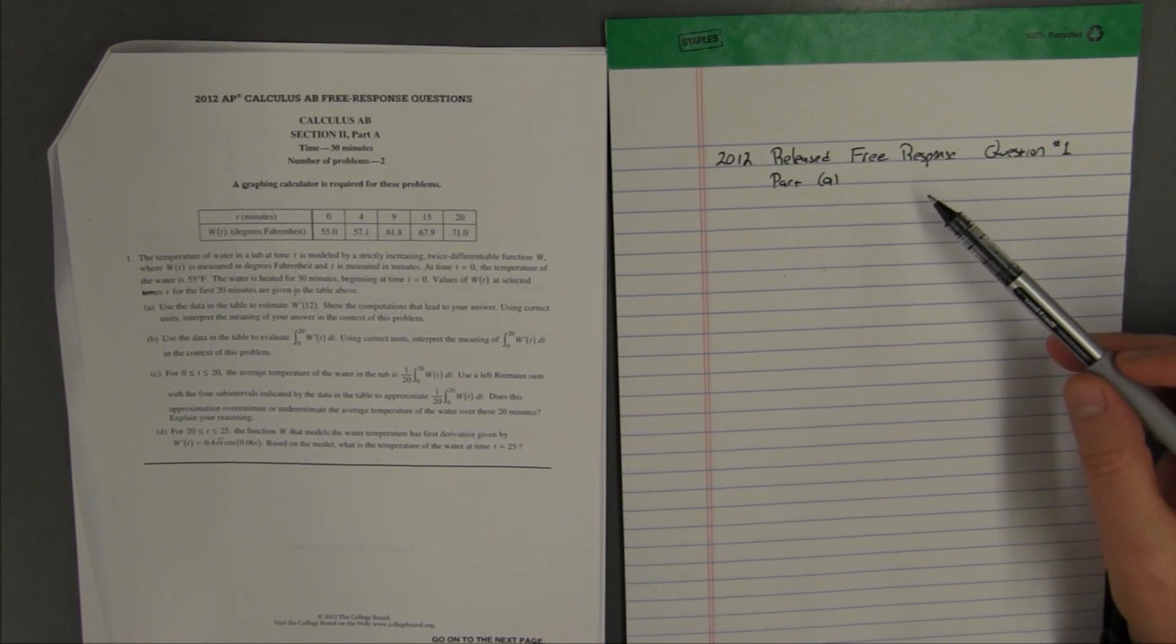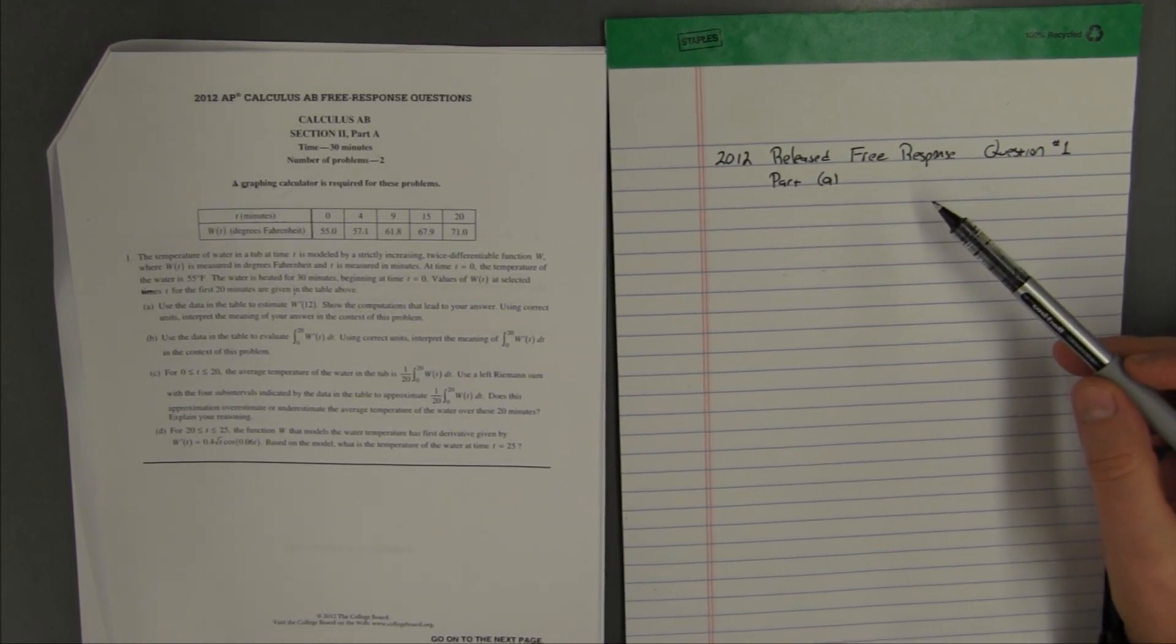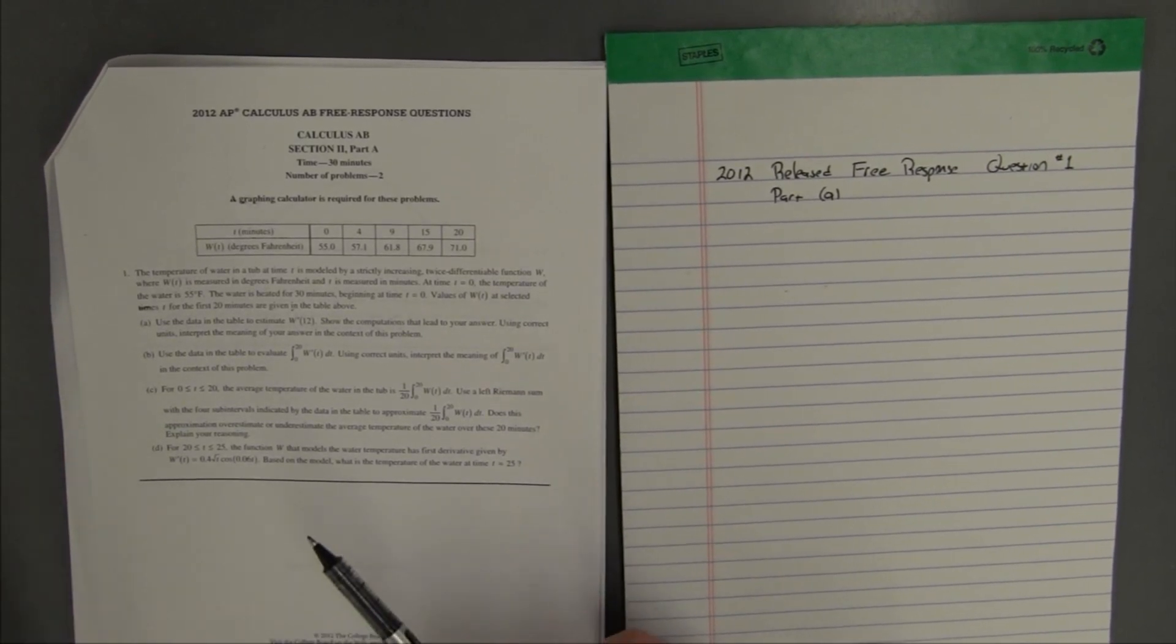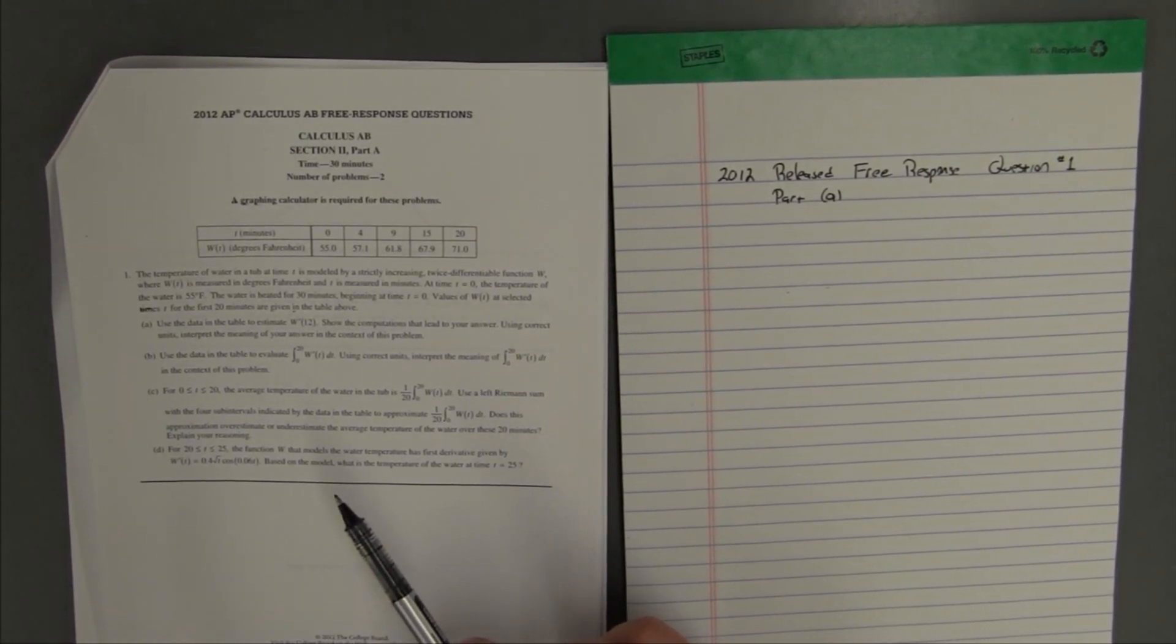We're doing the 2012 released free response question number one, part a. We have part a here. We have this table. The question says, use the data in the table to evaluate...